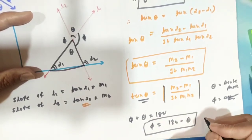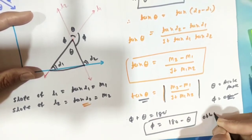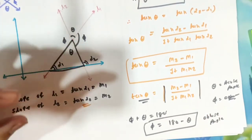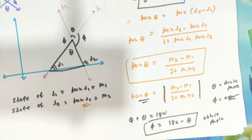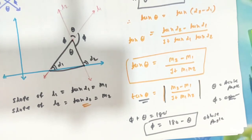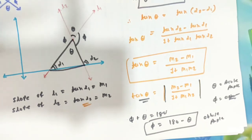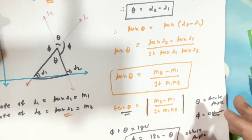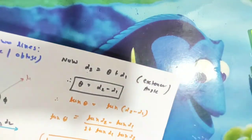So you will have the obtuse angle phi = 180 − theta. This is how you can find the angle between two lines. By using this formula, we can find the angle between two lines. Now the last concept: collinearity of three points.